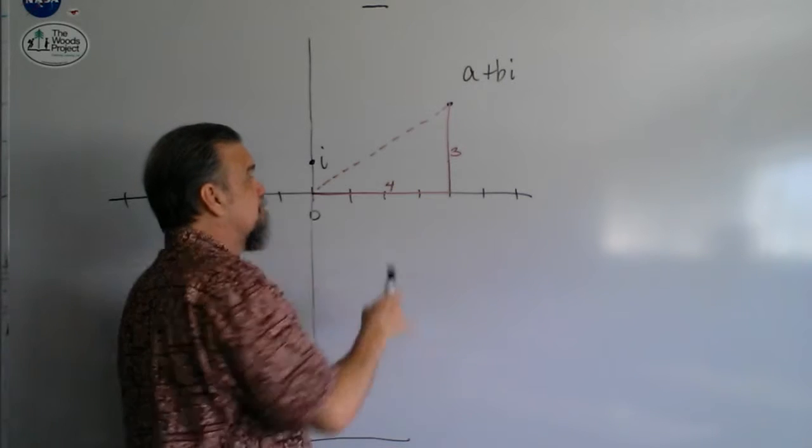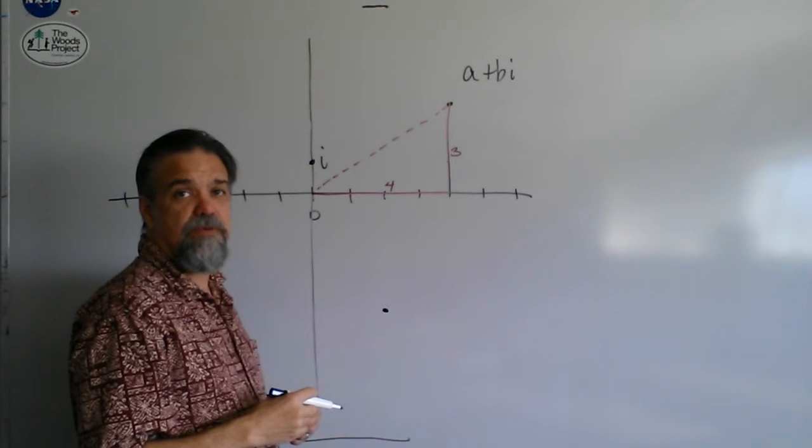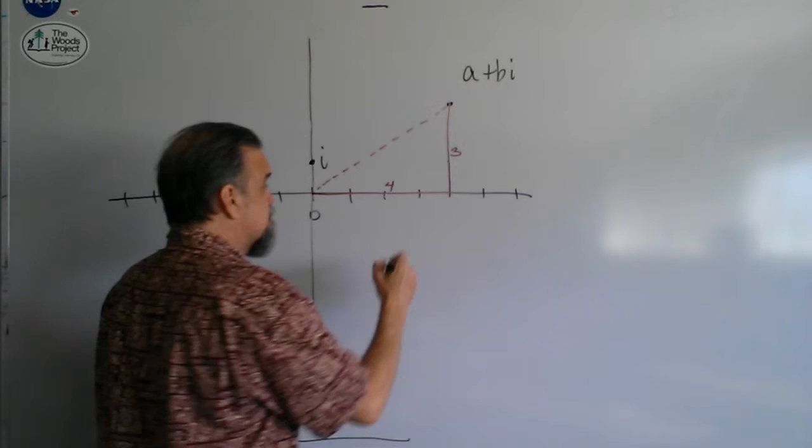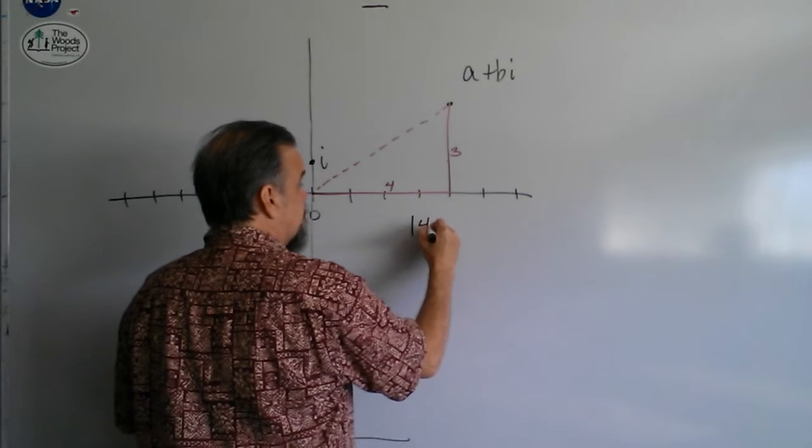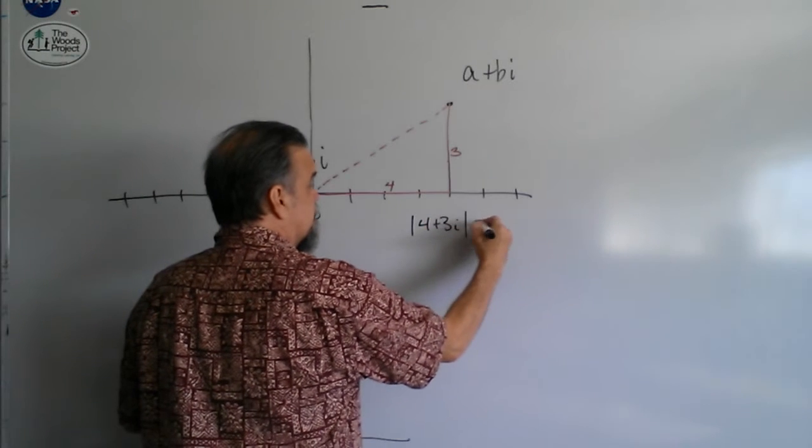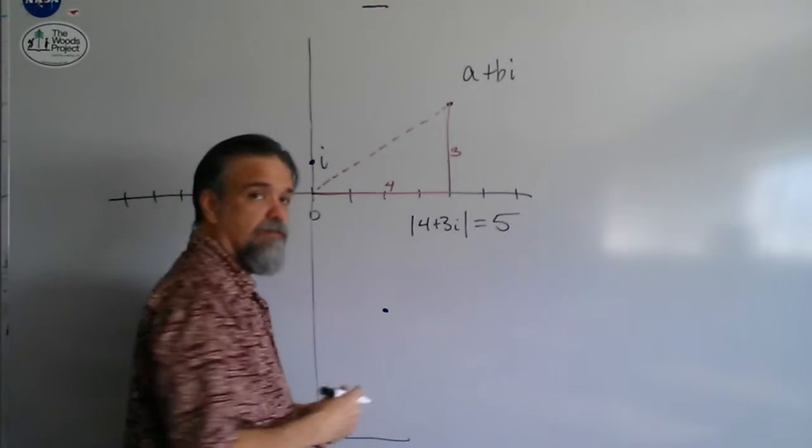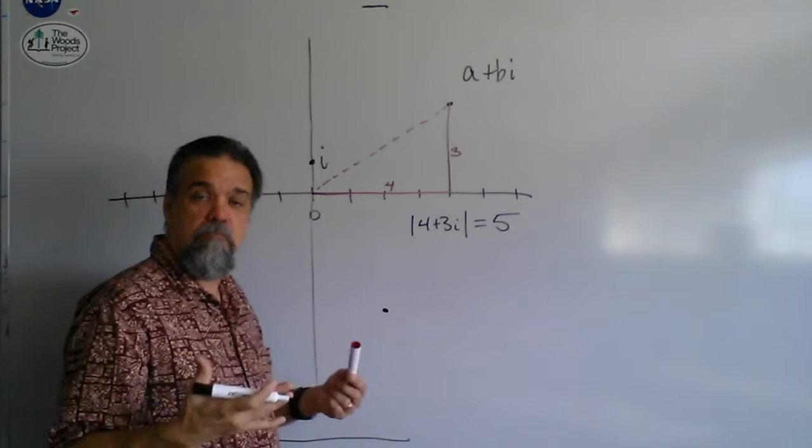So, this thing squared must be 25, and that tells me that the absolute value of 4 plus 3i is 5, the square root of 25.